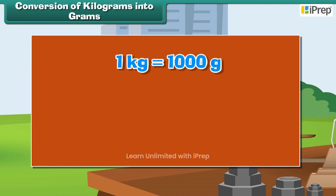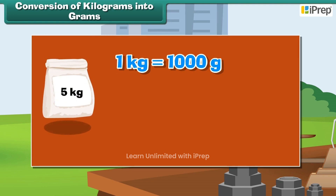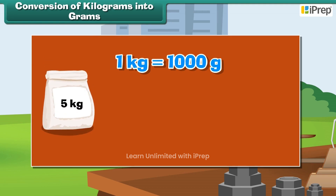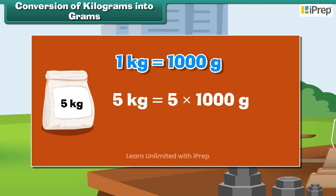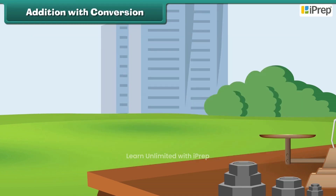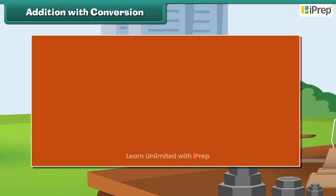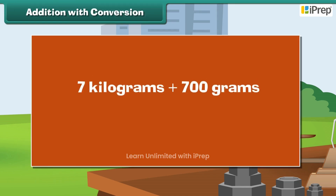Which equals 200 centimeters. Conversion of kilograms into grams: 1 kilogram is equal to 1,000 grams. Therefore, the weight of a 5 kg rice bag can be calculated as: 5 kg is equal to 5 into 1,000 grams, which equals 5,000 grams.